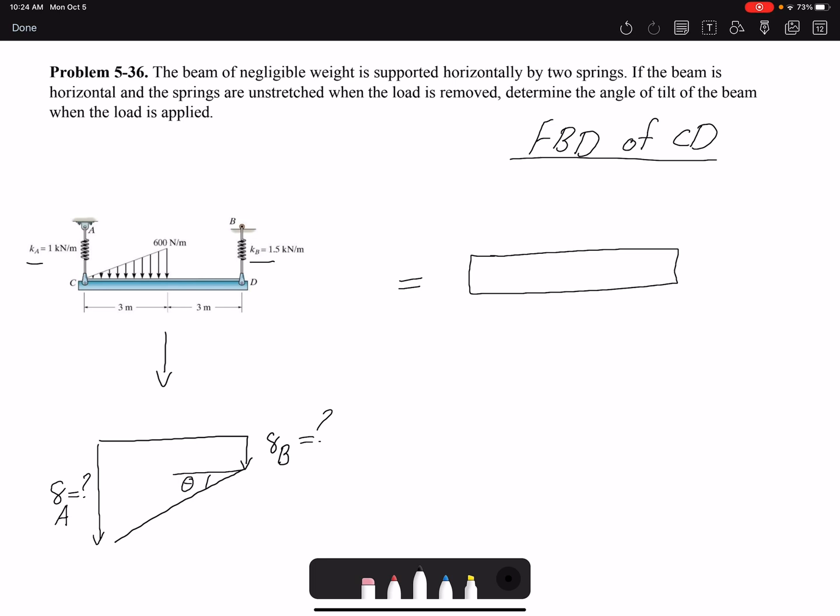Now I'm gonna draw the free body diagram of beam CD. The forces that are being applied: I have a force here at C, but because this spring is called A, I'm gonna call it Fa. Then here I'm gonna have Fb which is unknown. I also have distributed loading, a triangular loading. The resultant force Fr is 600 multiplied by 3 divided by 2.